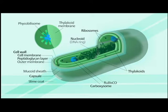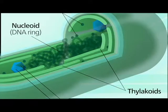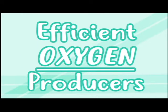Unlike other bacteria, their cell membrane is equipped with thylakoids that contain chlorophyll A, allowing them to release oxygen through photosynthesis. This release of oxygen was said to change the Earth's atmosphere from a reducing to an oxidizing one, shaping the ecology and evolution of various lifeforms.